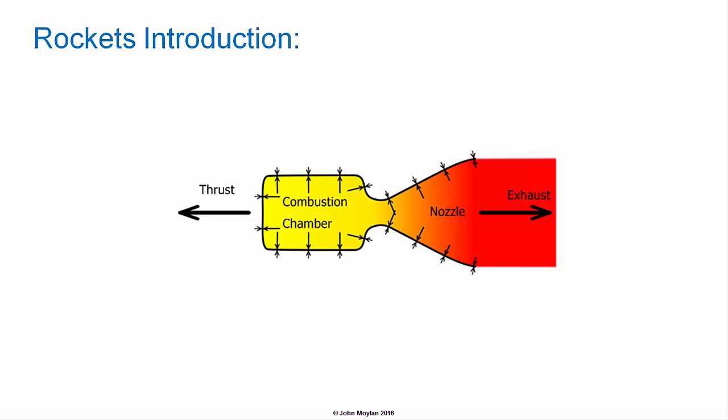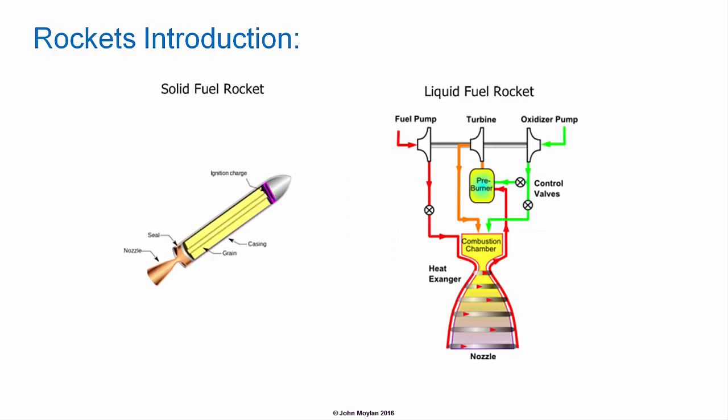In any air or spacecraft propulsion system, a working fluid, usually a gas, is accelerated by the system and the reaction to this acceleration produces a force on the system. In a jet or propeller driven aircraft, the gas is the air from the atmosphere. For a rocket, the gas is the hot exhaust produced during combustion. This is why a rocket works in space. The reaction pair is between the rocket and the exhaust gases. There are two main types of rocket engines: liquid fuelled rockets and solid fuelled rockets.